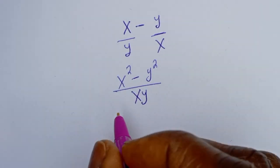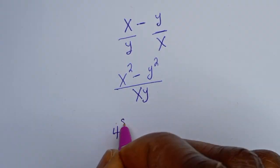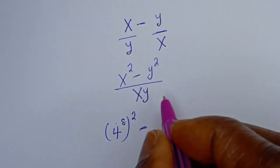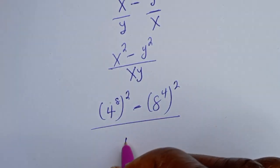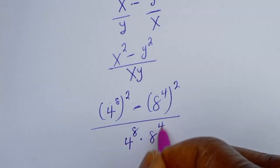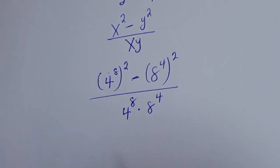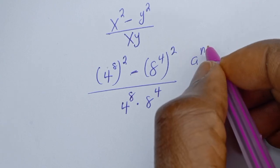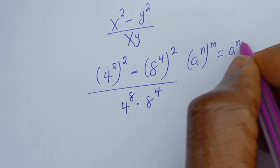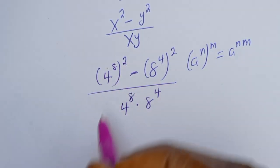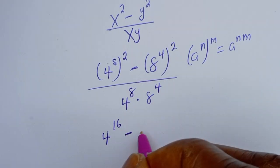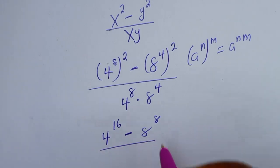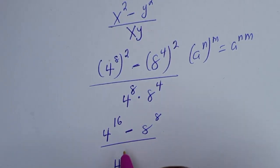Now let's substitute back the values of x and y. We have 4 to the power of 8, all squared, minus 8 to the power of 4, all squared, divided by 4 to the power of 8 multiplied by 8 to the power of 4. Applying the rule that y to the power of n to the power of m equals y to the power of n times m, this becomes 4 to the power of 16 minus 8 to the power of 8, divided by 4 to the power of 8 multiplied by 8 to the power of 4.